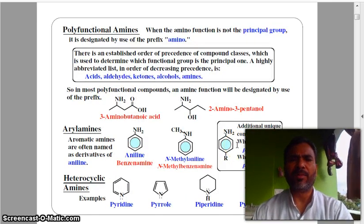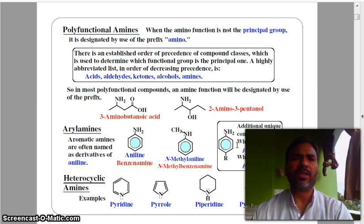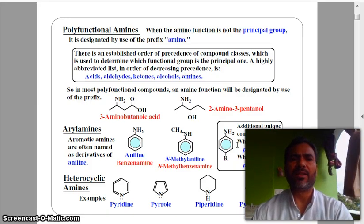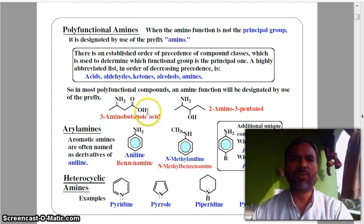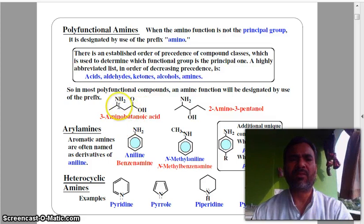Polyfunctional amine: when the amine function is not the principal group, it is designated by use of prefix amino. There is an established order of precedence of compound class which is used to determine which functional group is the principal one. So look at here.